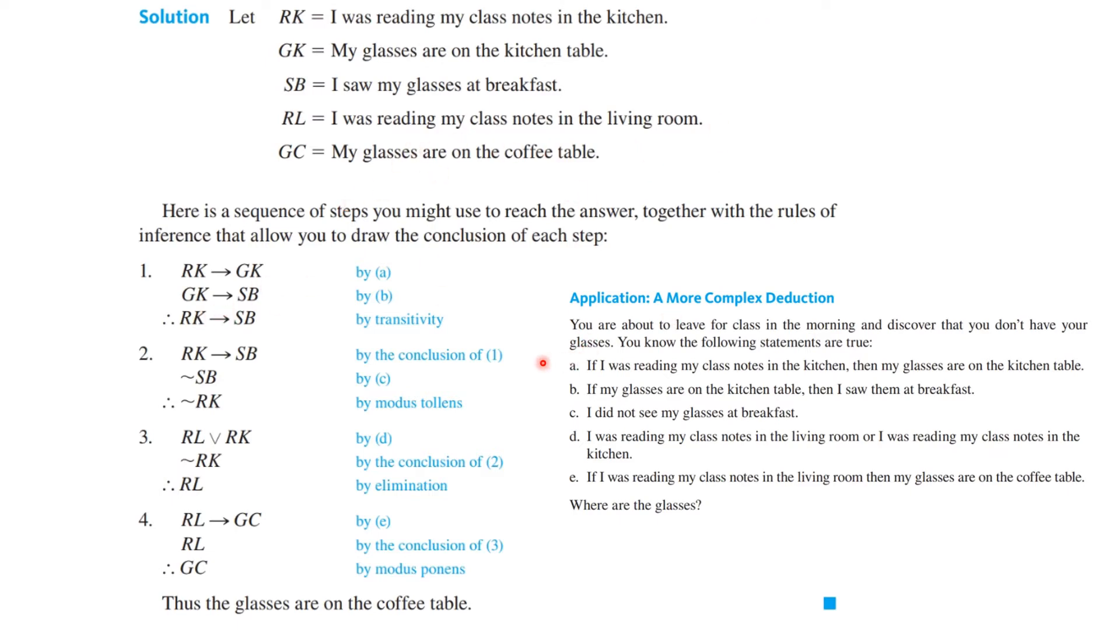So by statement A, which was here, if I was reading my glasses, then they're on the kitchen table. That's this. And then by B, if my glasses are on the kitchen table, then I saw them at breakfast. So by the hypothetical syllogism or transitivity, the first implies the second, the second implies the third, then the first implies the third. So this has to be true.